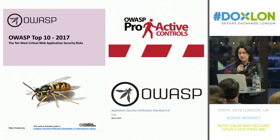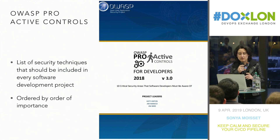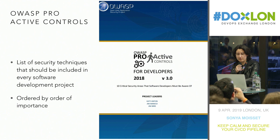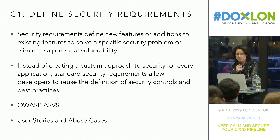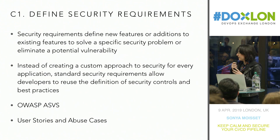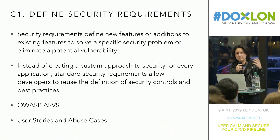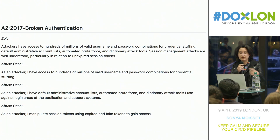I'm going to focus on three: the OWASP Top 10, the OWASP Proactive Controls, and the OWASP ASVS. The OWASP Proactive Controls is a list of security techniques that should be included in every software development project. The first one is define security requirements — basically it might be like a checklist. You might be using user stories, but you can also use abuse cases. This is an example for broken authentication — instead of 'as a user,' you do 'as an attacker.' You switch the point of view.